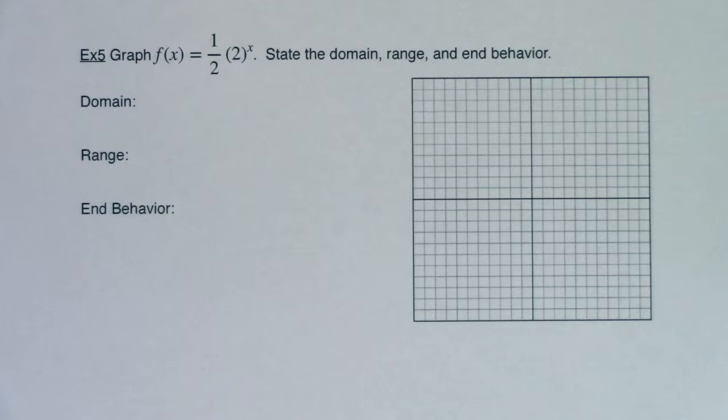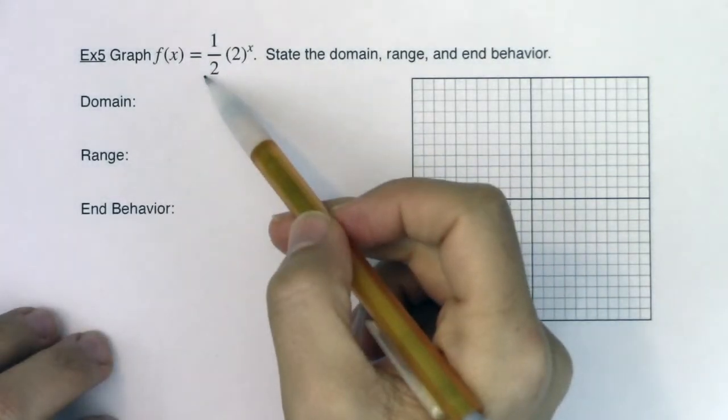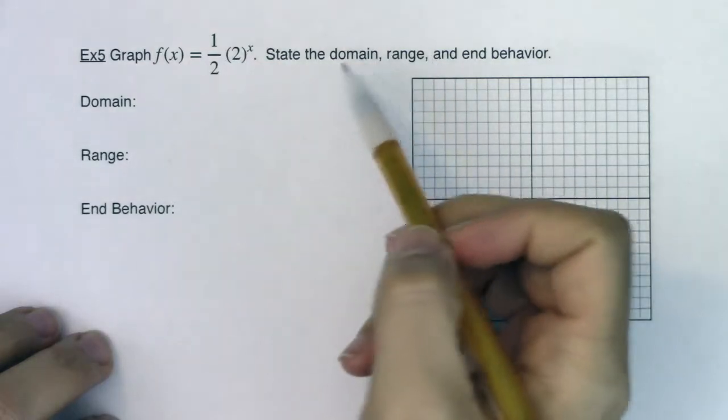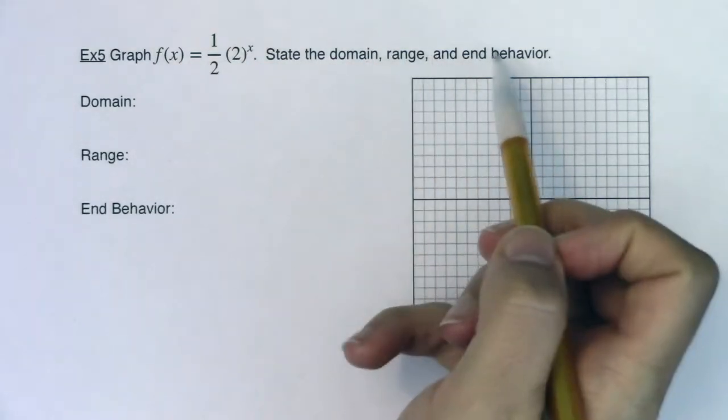Hey, Math 31. Welcome to example 5. This time out, we're going to graph the function 1 half times 2 to the x. And again, we're going to do domain, range, and end behavior.